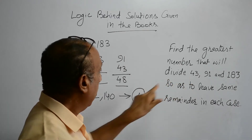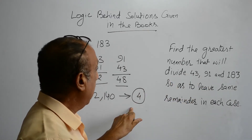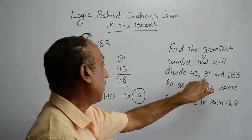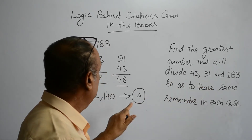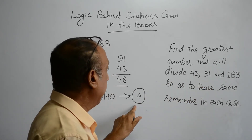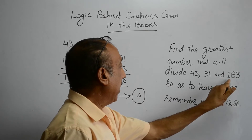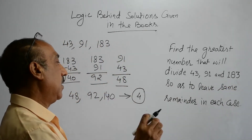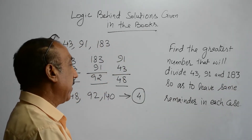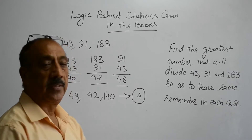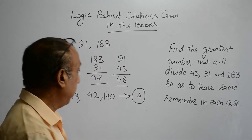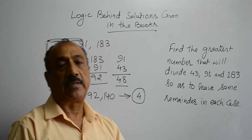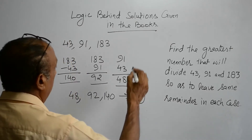If we divide 91 by this number, again we are going to get the remainder as 3. And in the similar way, by dividing 183 by 4, we are going to get the same remainder — we are going to get 3 as a remainder.